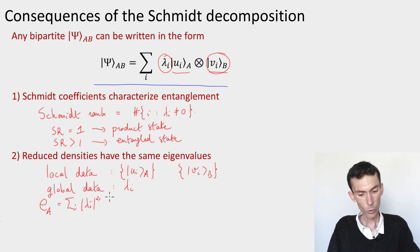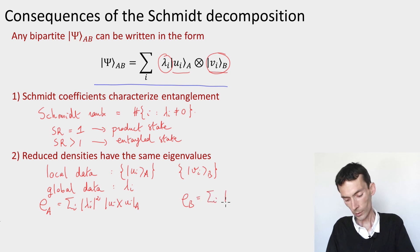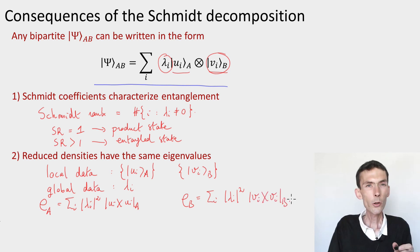And if I compute the reduced density on B, then I will get the sum over i of lambda i squared vi. So here there's two interesting things.